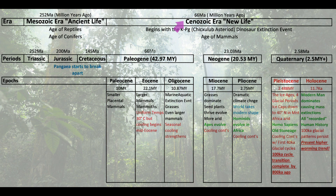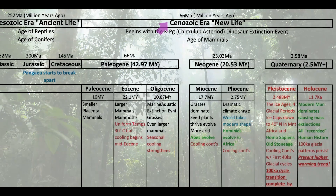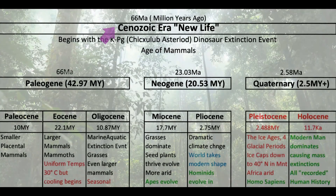The Cenozoic era, or 'new life,' began 66 million years ago. It begins with the KPG event, or the Chicxulub asteroid that hit near Cancun, which is believed to have caused the dinosaur extinction. This left a large niche for the mammals, and they began exploiting that and evolving quickly. We're going to spend most of our time in the latter part of the Cenozoic, but let's become familiar with the whole era quickly.